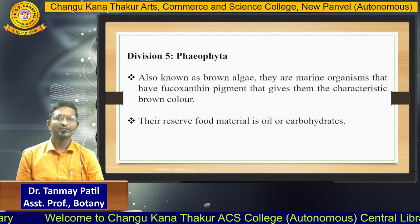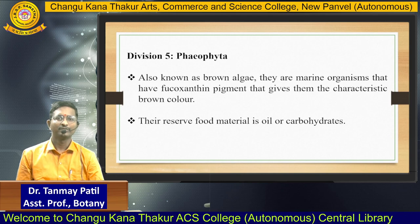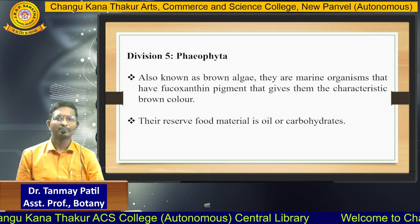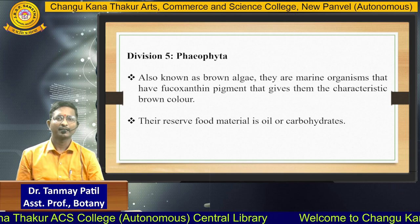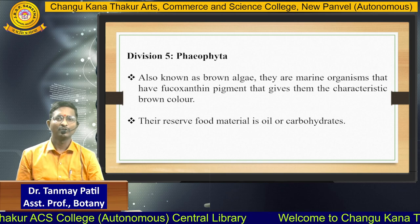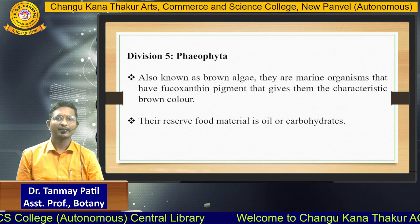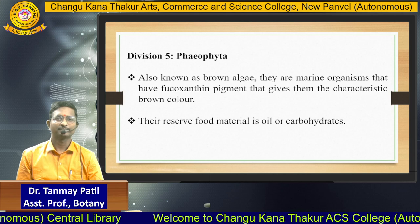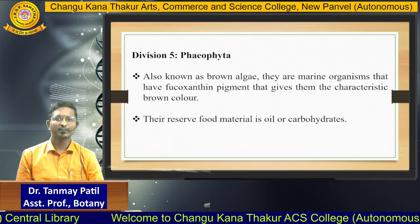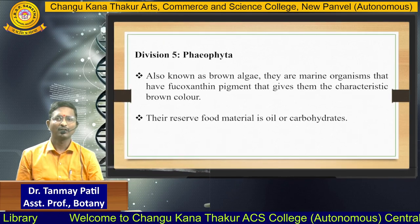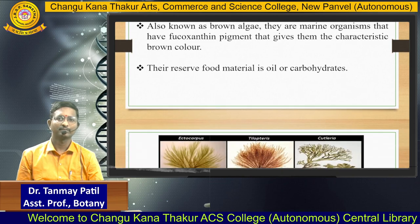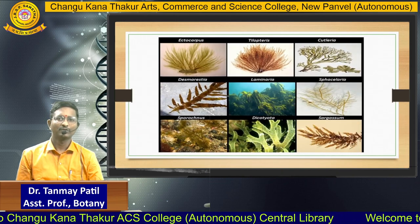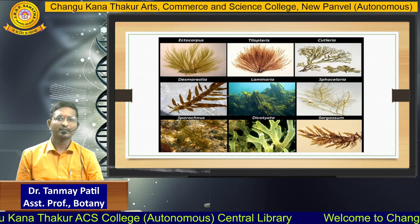The next division is Phaeophyta, which is also known as brown algae. They are marine organisms that have leucosanthin pigment that gives them the characteristic brown color. Their reserve food material is oil or carbohydrate. Here is a picture showing the algae from the division Phaeophyta.